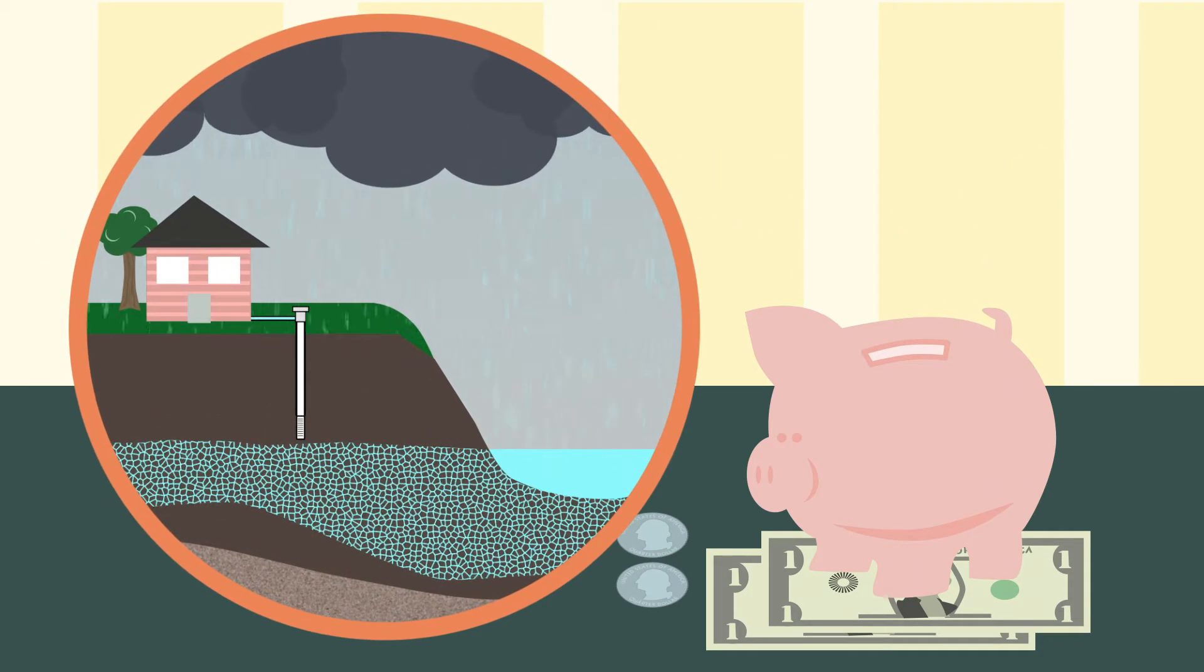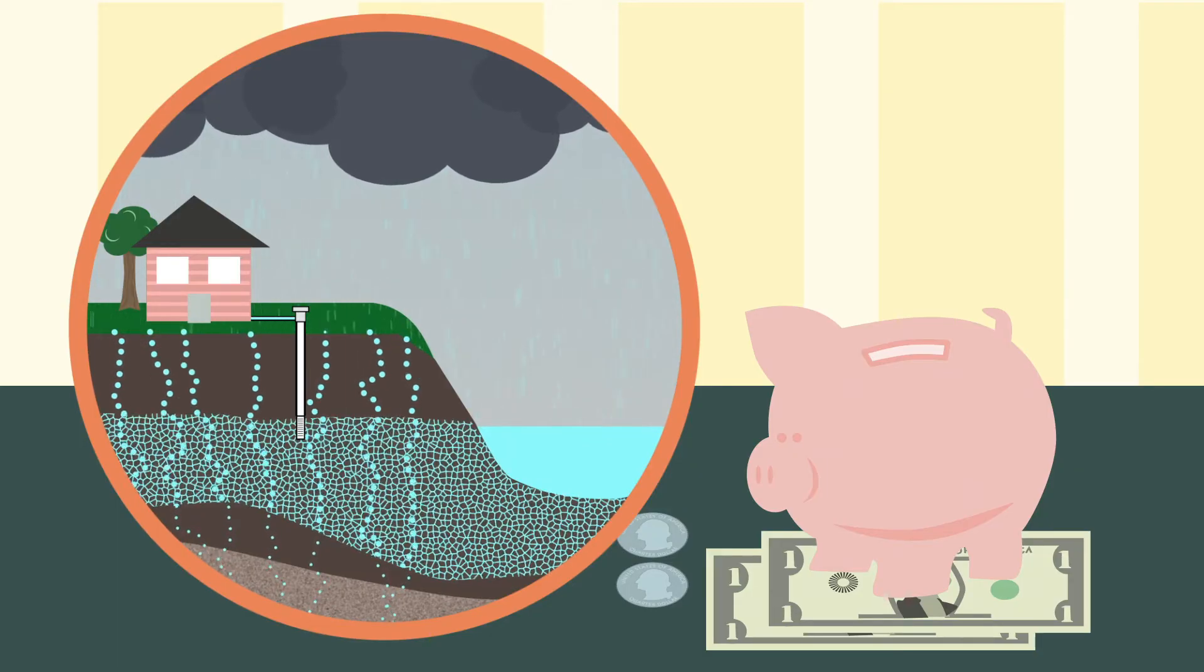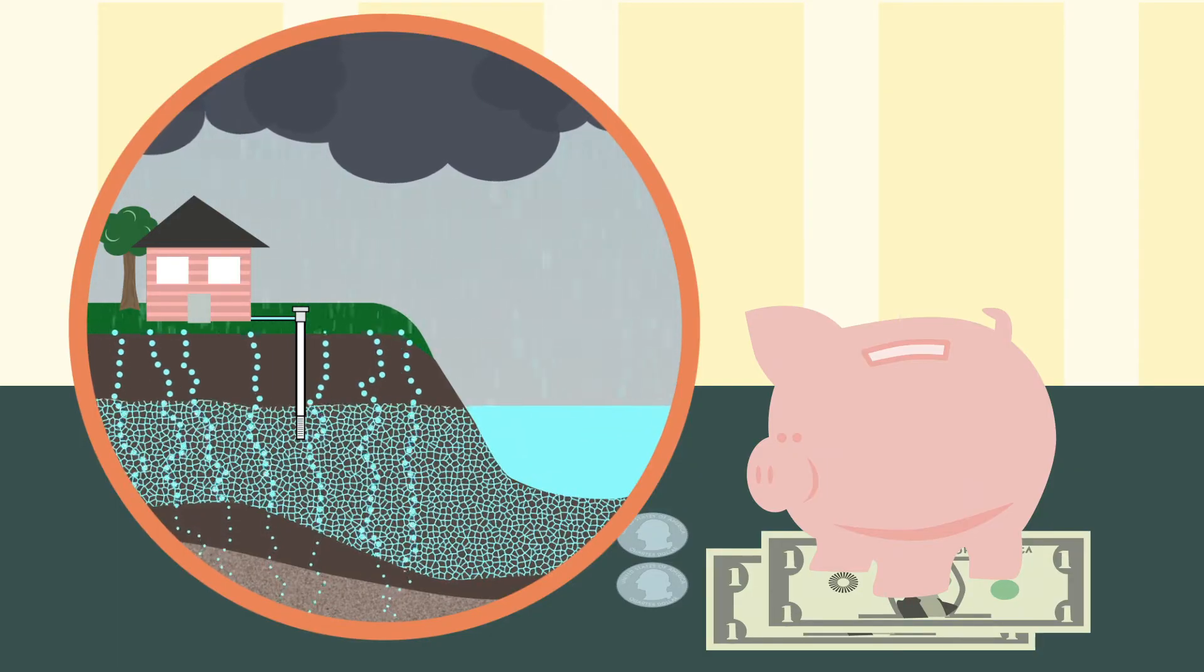Nature makes a deposit into groundwater when rain is able to soak into the ground. The size and speed of these water deposits is determined by the local land cover, geology, and precipitation. For groundwater to be sustainable, our deposits need to exceed our spending.